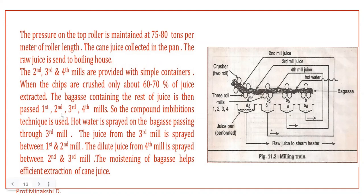The compound imbibition technique is used in the milling process. Hot water is spread on the bagasse passing through the third mill. The juice from the third mill is spread between the first and second mill. The diluted juice from the fourth mill is spread between the second and third mill. The moistening of bagasse helps the efficient extraction of the cane juice.